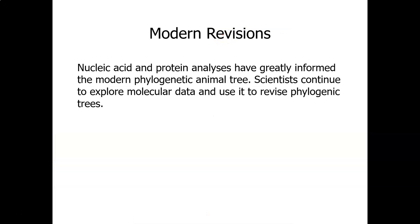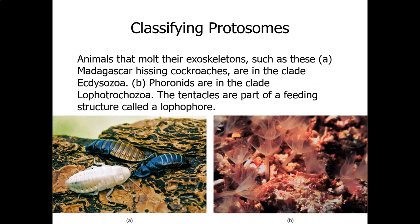The protostomes, remember, are mouth first. We classify them based on ones that shed their exoskeletons, and that would be the ecdysozoans. Cockroaches would be an example. And then the ones that do not shed their exoskeletons would be the lophotrochozoans. The tentacles of lophotrochozoans are called lofophores. Tentacles are feeding structures called lofophores.